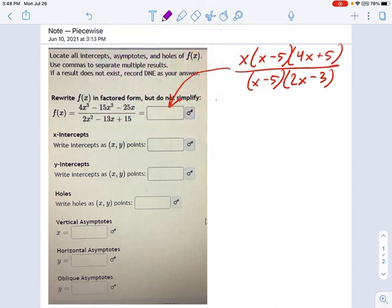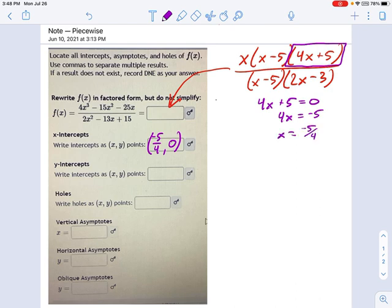What are x-intercepts? Those are factors on the top which are not on the bottom. So I have one of those right here—4X plus 5. So the x-intercept is at negative 5 over 4 comma 0. We solved it: 4X plus 5 equals 0, so that's 4X equals negative 5, X equals negative 5 over 4.